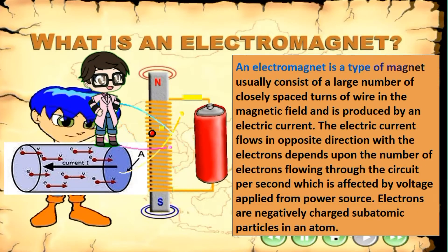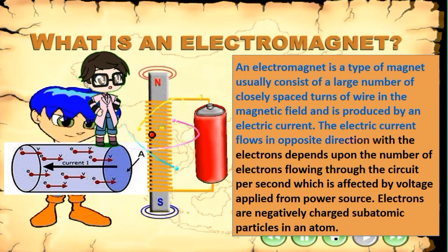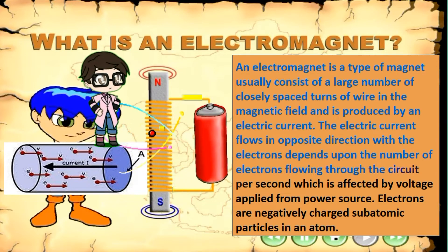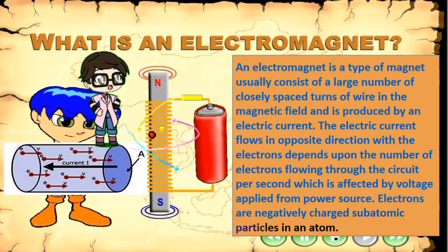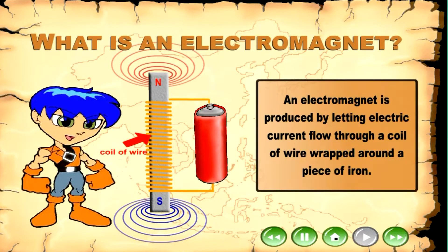An electromagnet is a type of magnet that usually consists of a large number of closely spaced turns of wire. The magnetic field is produced by an electric current. The electric current flows in the opposite direction to the electrons, and depends upon the number of electrons flowing through the circuit per second, which is affected by the voltage applied from the power source. Electrons are negatively charged subatomic particles in an atom. An electromagnet is like a permanent magnet with north and south poles, and is produced by letting electric current flow through a coil of wire wrapped around a piece of iron.